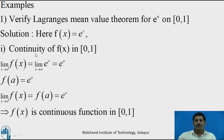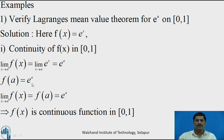By the definition of continuity, a function f(x) is continuous if the limit of the function and the value of the function at that point are equal. We find the limit of f(x) as x tends to a, where a is any point in [0, 1]. Since f(x) = e^x, the limit as x tends to a is e^a. The value of the function at x = a is also f(a) = e^a. Since both are equal, by the definition of continuity, f(x) is continuous in [0, 1].